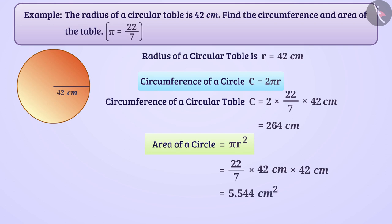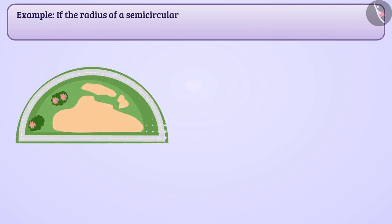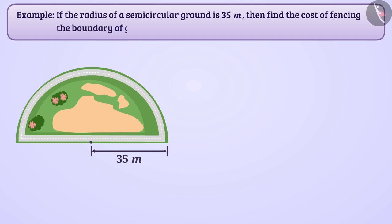Let's see the next example. If the radius of a semicircular ground is 35 meter, then find the cost of fencing the boundary of ground at a rate of Rs 75 per meter. The radius of semicircular ground is r = 35 meter.